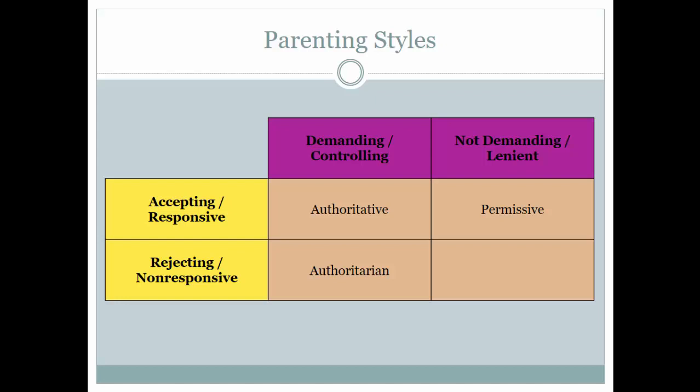When parents are not demanding, overly lenient, and also not very warm and accepting, we call that parenting style uninvolved. These parents are essentially roommates with their kids and may not be physically present. Unlike permissive parents who are still attentive, uninvolved parents really don't pay much attention to the child. They may provide basic necessities — food, water, shelter — but they don't take a particular interest in their children.